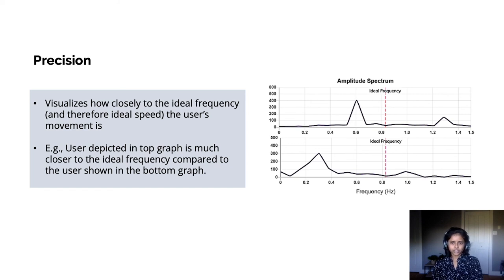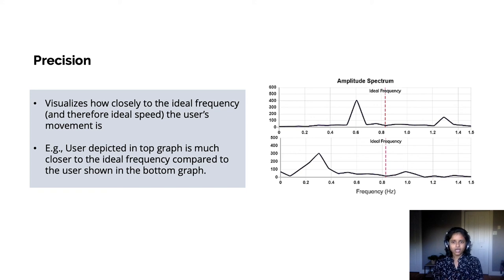For our final metric, we take the amplitude spectrum of the user's movement. The ideal frequency is computed by using the tempo of the song. This visualization allows us to see how close the user's movement across the trial is to the ideal frequency. It can be observed that in the top graph, the user is much closer to the ideal frequency as compared to the user depicted in the bottom graph.